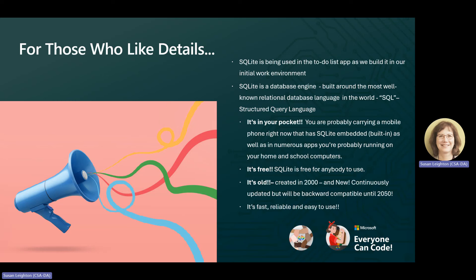For those who like details, behind the scenes we are using SQLite as our embedded SQL database engine for the to-do list app being built. SQL stands for Structured Query Language and is the most well-known database management and query language in the world. As the most used database engine globally, you are probably carrying a mobile phone right now that has SQLite built in, as well as in numerous apps you're probably running on your home and school computers. Since it is in the public domain, SQLite is free for anybody to use. It was initially created in 2000, and the developer's intent is to support it until 2050, keeping it backward compatible in order to avoid breaking other software which depends upon its functionality. SQLite gives us a fast, easy way to integrate a database with our Python code, providing us with what we need for our to-do list application.